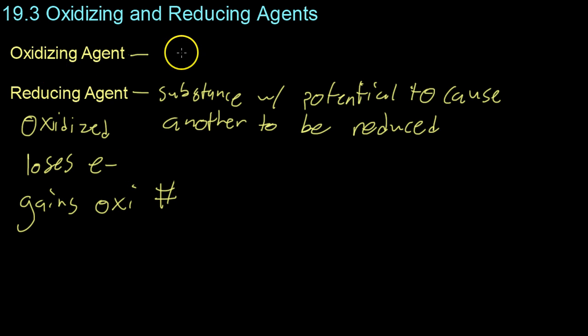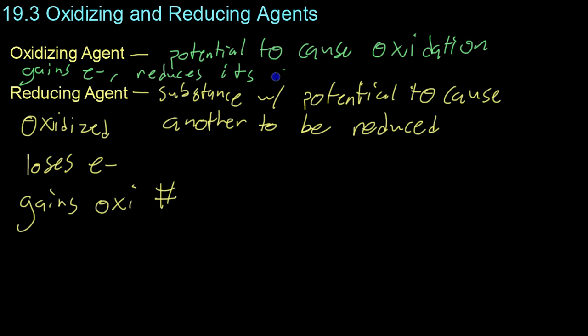Oppositely, the oxidizing agent has the potential to cause another to be reduced. Basically, it can cause reduction. This is what gains the electrons, because it takes away the electrons from the other, causing oxidation. Gains electrons and reduces its oxidation number. So this is the reduced species in the reaction.